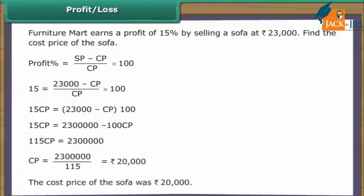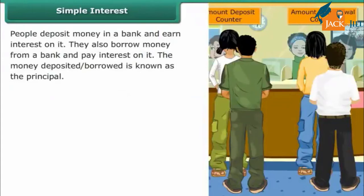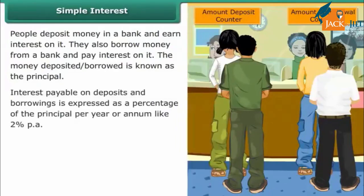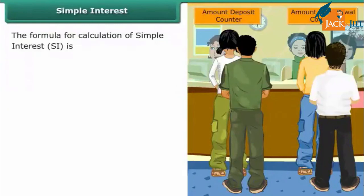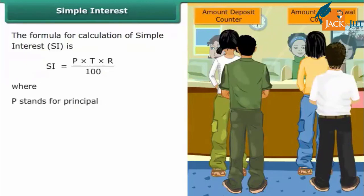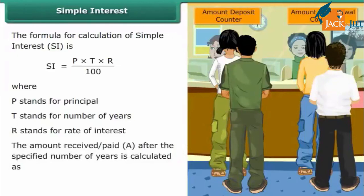Simple Interest. People deposit money in a bank and earn interest on it; they also borrow money and pay interest on it. The money deposited or borrowed is known as the principal. Interest is expressed as a percentage of the principal per year, e.g., 2% per annum. Keeping the principal the same and calculating interest at the same rate every year is known as simple interest. Formula: SI = (P × T × R) / 100, where P is principal, T is number of years, R is rate of interest. Amount = A = P + SI.